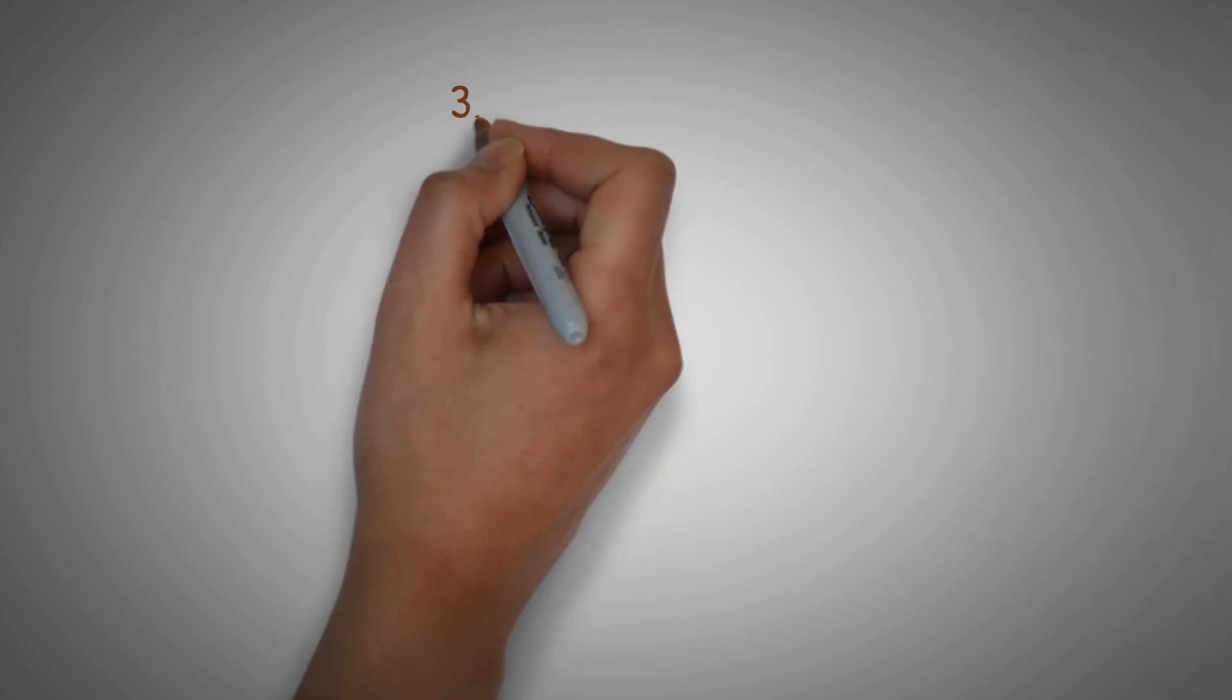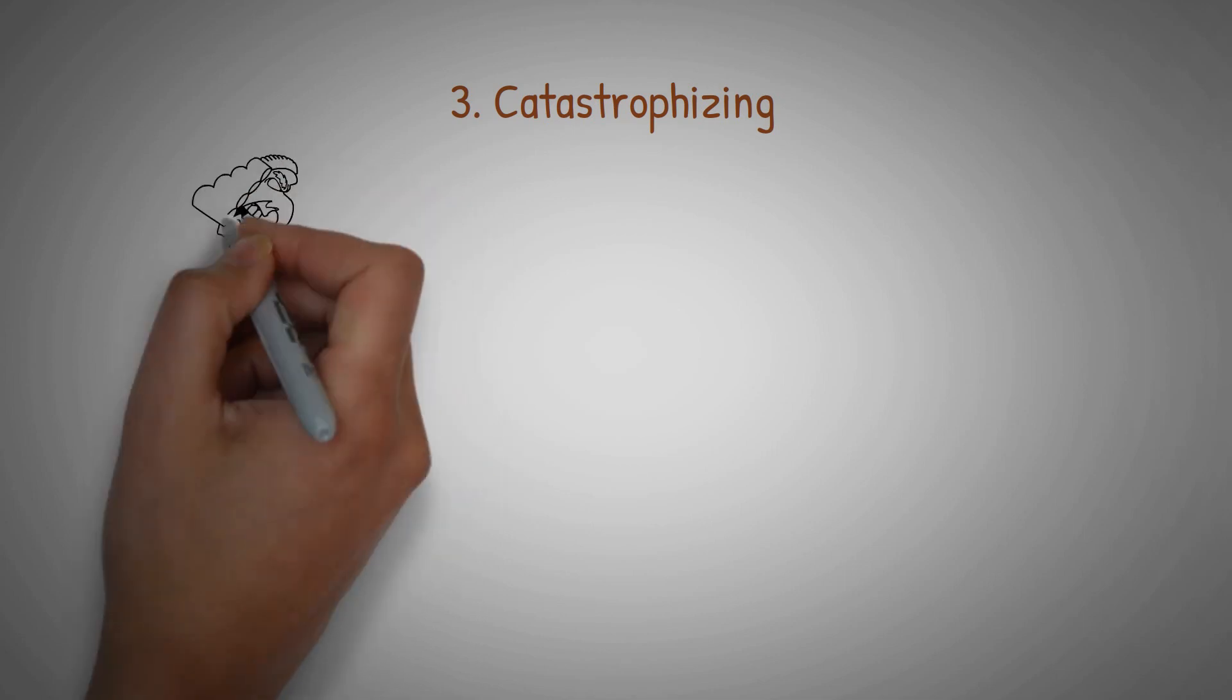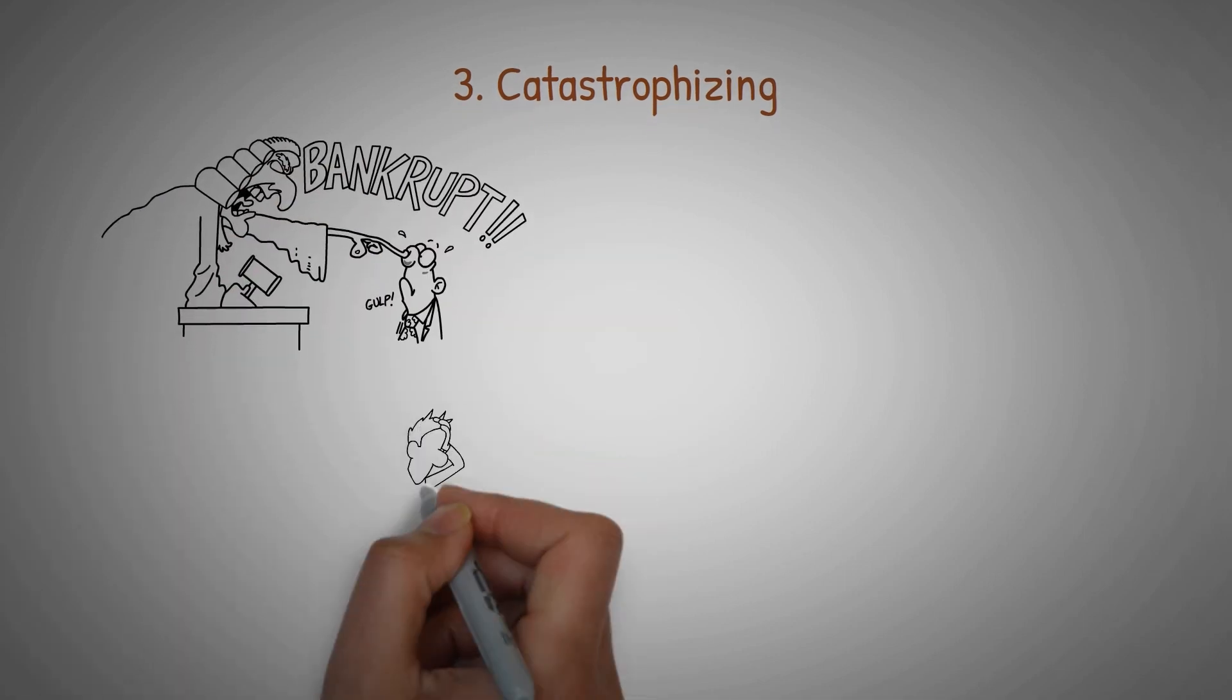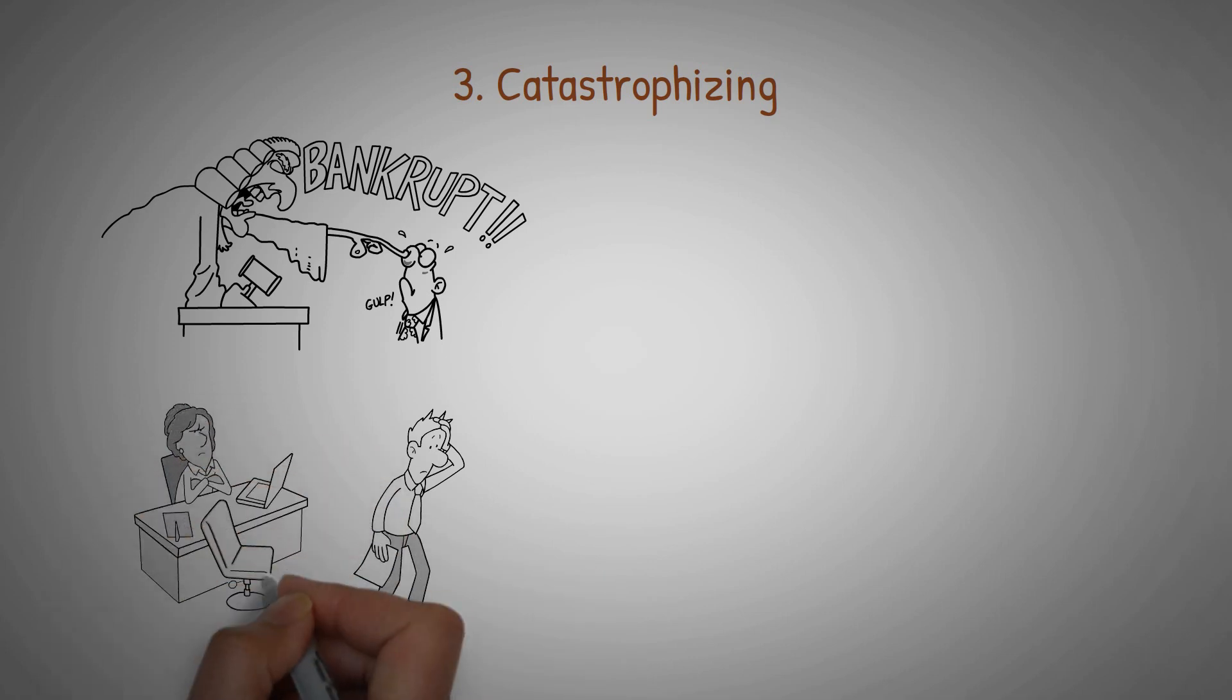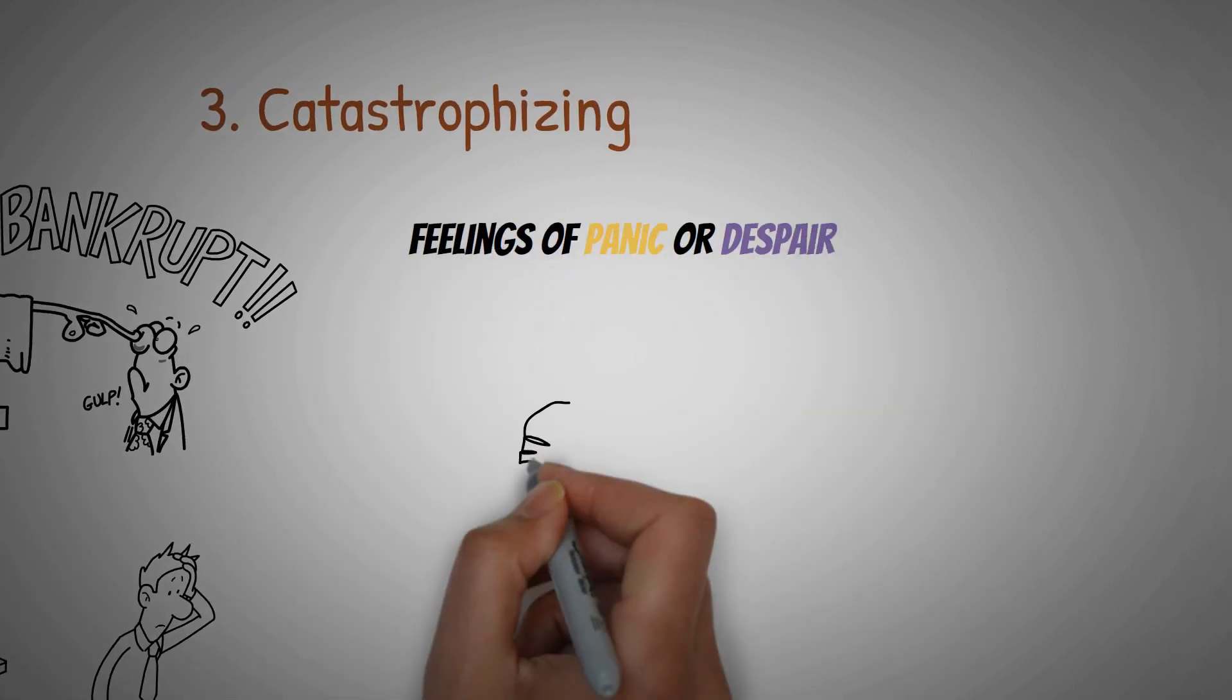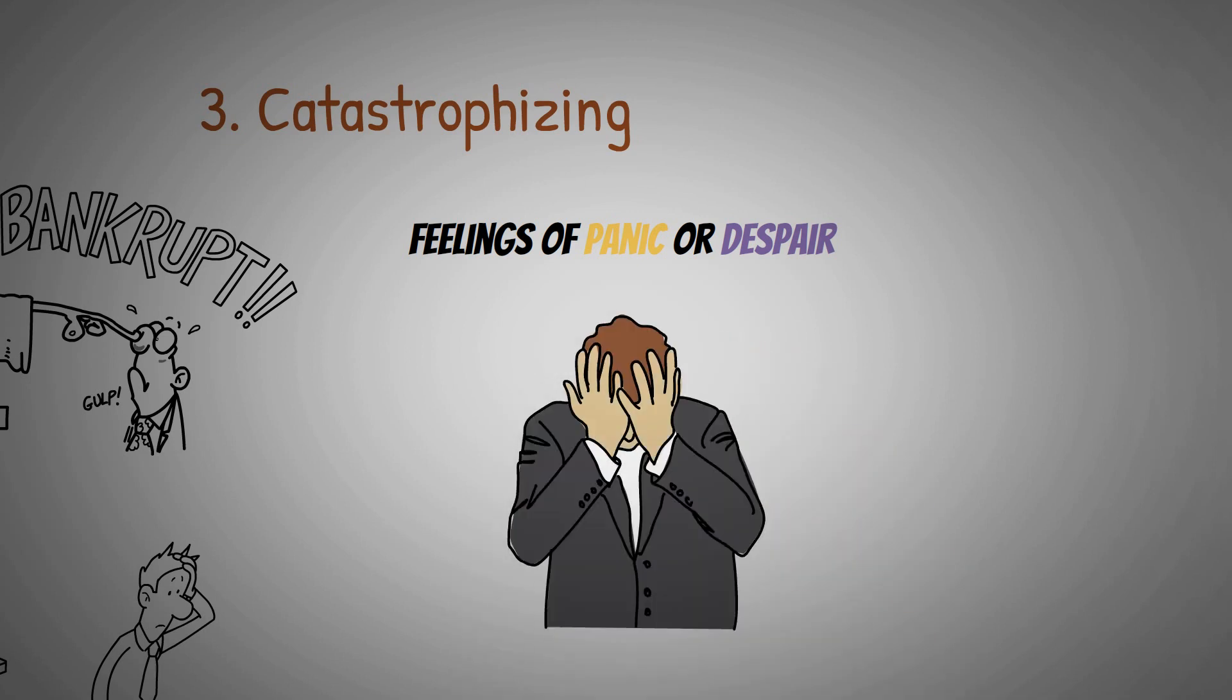A third unhelpful thinking pattern is catastrophizing, which is when we imagine the worst-case scenario in a given situation. For example, you might imagine that if you don't get the job you applied for, you'll never be able to find work again and end up homeless. This kind of thinking can lead to feelings of panic or despair and might even make you avoid taking risks or trying new things.